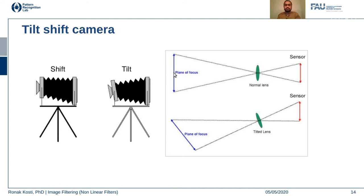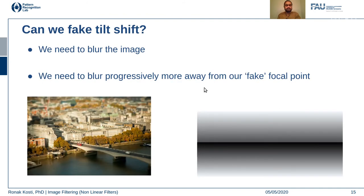To understand how to fake tilt-shift photography, it depends on how your camera sensor receives input light. When you tilt and shift your camera, light from different regions of the input scene arrives at the sensor at different times, causing blur, which generates the images we saw before. Can we fake it? That is the main question. Since tilt-shift photography generates images with different blurred regions, essentially what we have to do is find regions we want to highlight and then increasingly blur the remaining parts of the region.